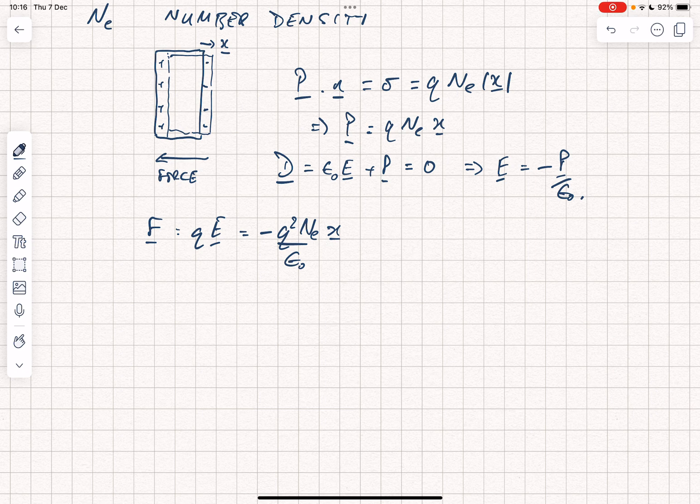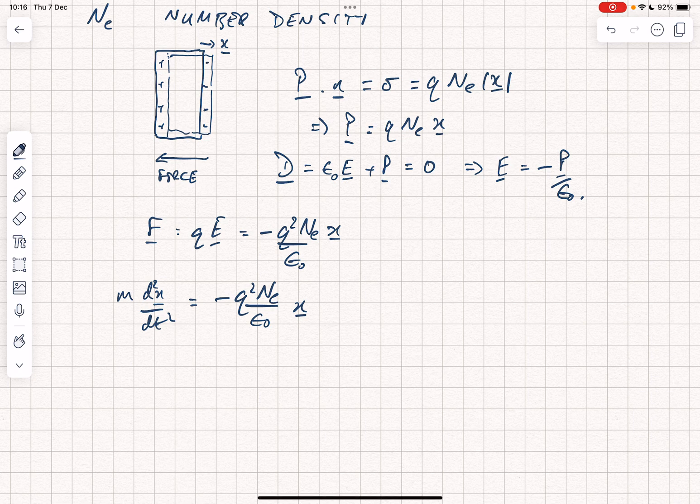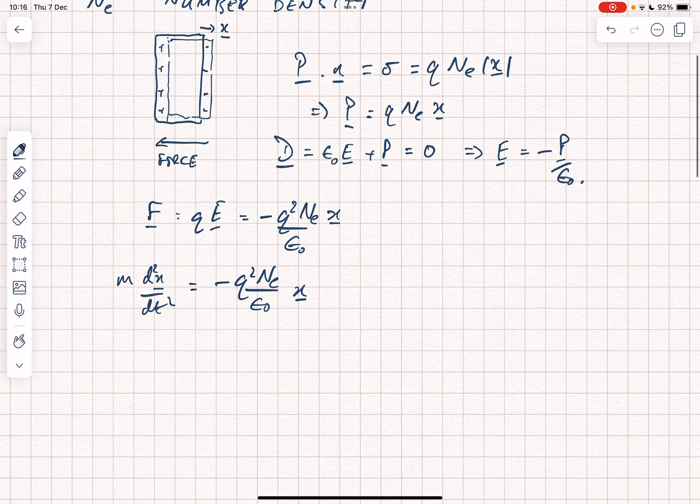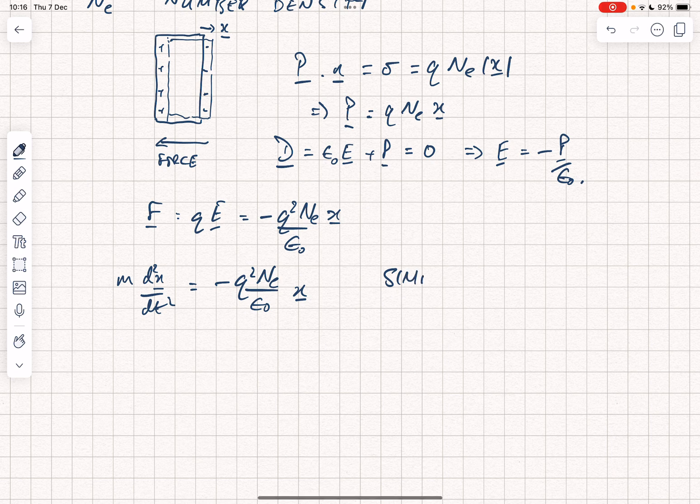We can substitute for F to write M d2X by dT squared is equal to minus Q squared Ne over epsilon 0 X. And at this point you should be jumping up and down and saying it's a simple harmonic oscillator, because this kind of an equation ought to be something you recognize immediately.